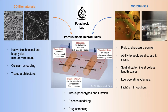Most traditional efforts into understanding mechanotransduction — the process by which cells convert mechanical signals to biological responses — focus solely on one phase, such as the stiffness of the extracellular matrix or the effects of shear stress from flowing blood or interstitial fluid. Our group tries to look at these together, because many signaling pathways activated by the solid phase are also activated by the fluid phase, and at a mechanical level, forces from the fluid are balanced in part by stresses in the solid phase.